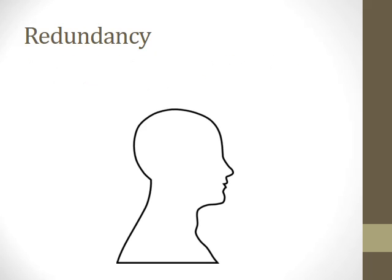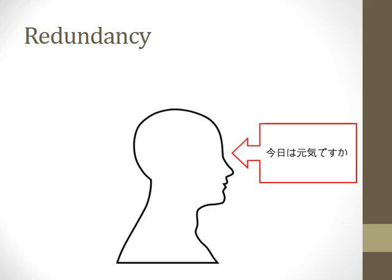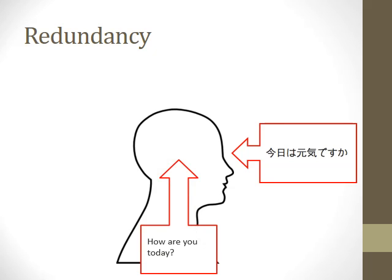There may be some situations where visual and audio text might make pedagogical sense, as in the case of non-native language learners. In this case, signaling can decrease cognitive load by directing the learner to the essential text instead of having them search for it.